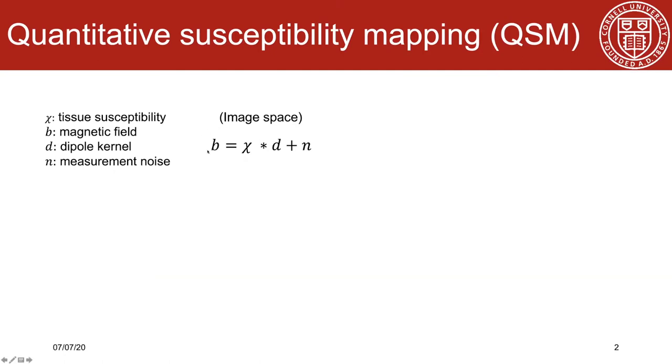This equation shows the QSM forward model in image space where chi is the tissue susceptibility, b the magnetic field, d the dipole kernel, and n the measurement noise. Dipole convolution can also be defined in k-space where capital D is the Fourier transform of the image space dipole kernel.